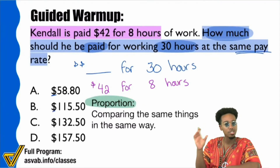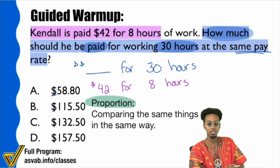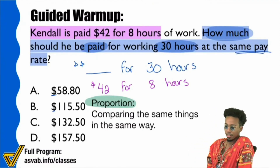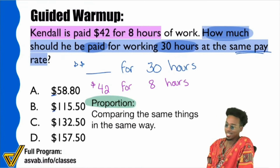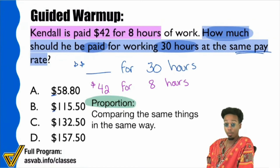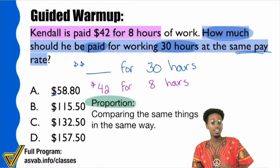Do we see that comparison happening — money and time, money and time — with just one blank to fill in? Even if you don't see it, don't worry, because you can still get this problem right. But I'm going to show you how much easier it is if you know proportions. Let me first show you a really, really annoying way to do this, then I'll show you how to easily get it done with proportions.